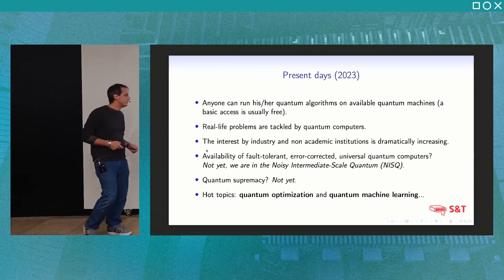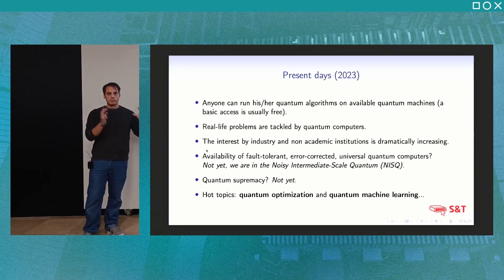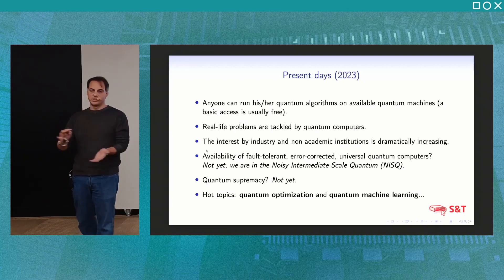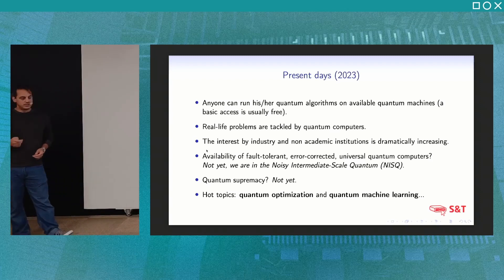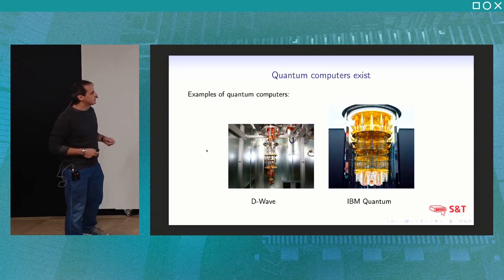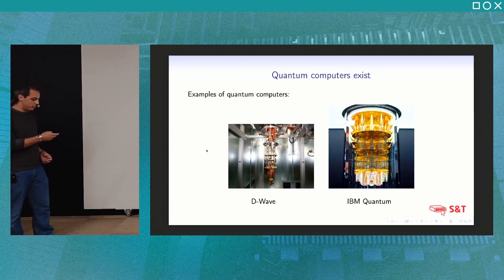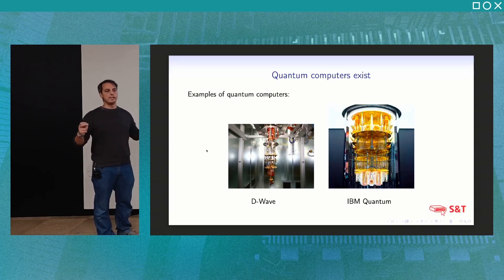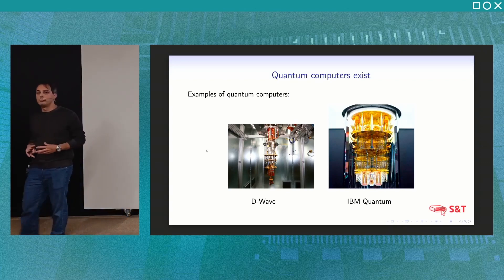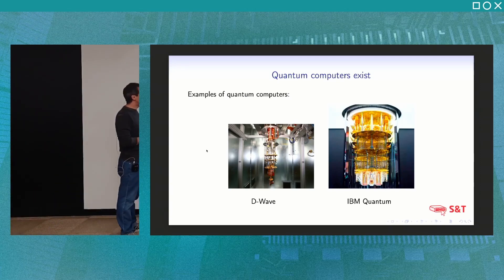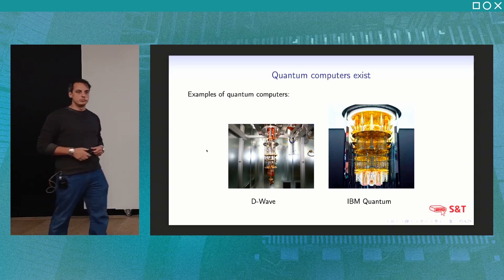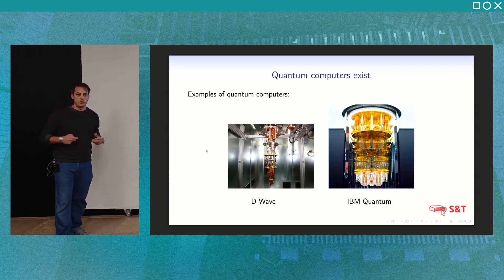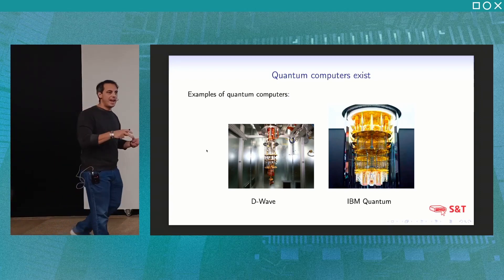The hot topics in the present day are quantum optimization — specific-purpose quantum machines designed to solve optimization problems using quantum phenomena — and quantum machine learning, which is the main topic of this talk. Quantum computers exist: here we have two celebrated examples — the quantum annealer manufactured by D-Wave, which is a specific-purpose computer to solve a quadratic optimization problem, and the prototypes of a universal quantum computer by IBM. The quantum processor uses a refrigerator to achieve cryogenic temperatures, enabling superconductive phenomena where the qubits are realized by superconductive circuits.